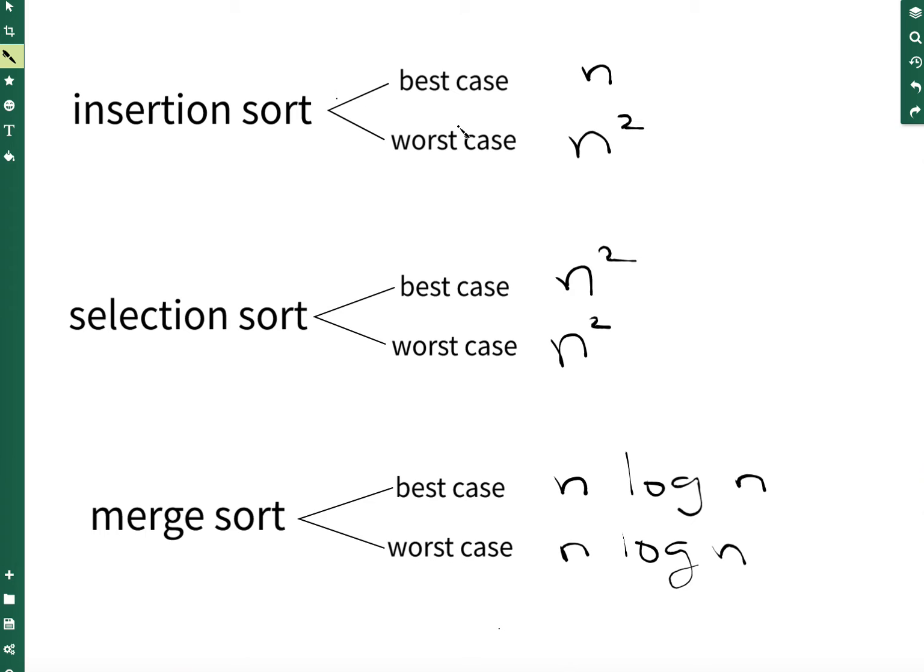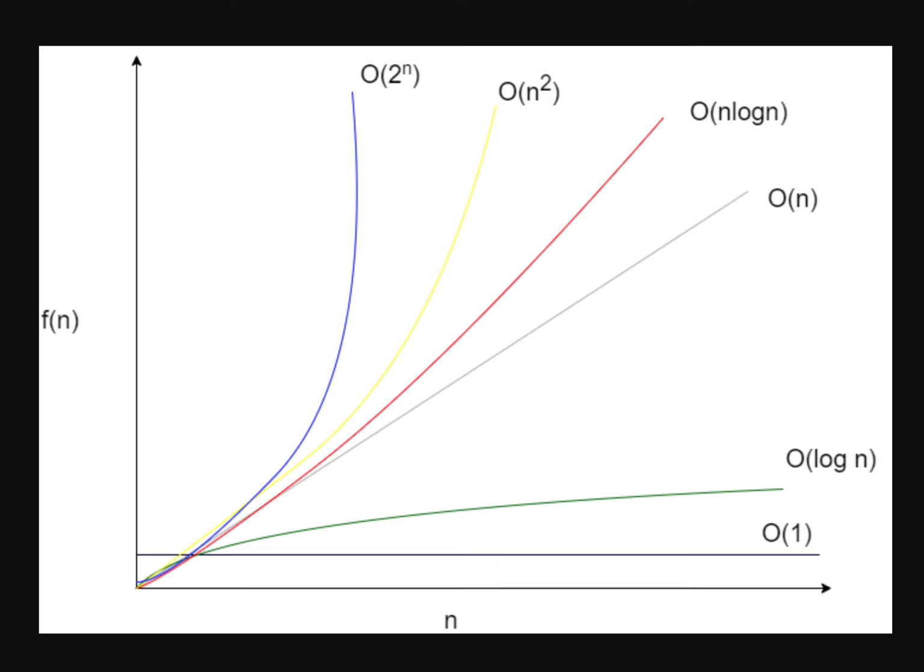But that's not always the case because if we take a look at this bottom left corner here, right? And what does this bottom left corner represent? It represents when the list has a small number of elements. Let's say between one to ten elements, we get to this bottom left corner. And if we zoom in there, then we get behavior that is different than what we see here in the top right corner.